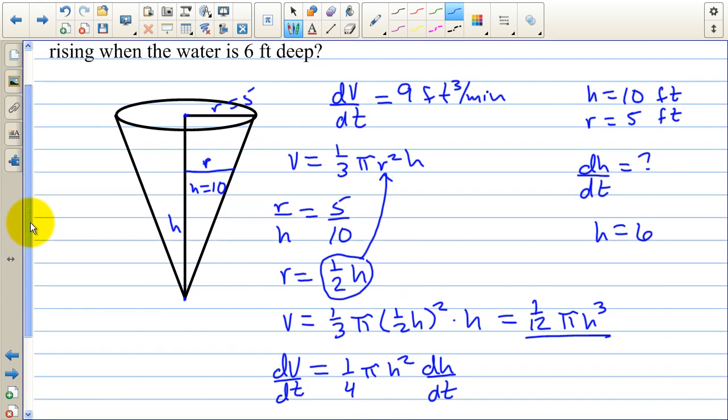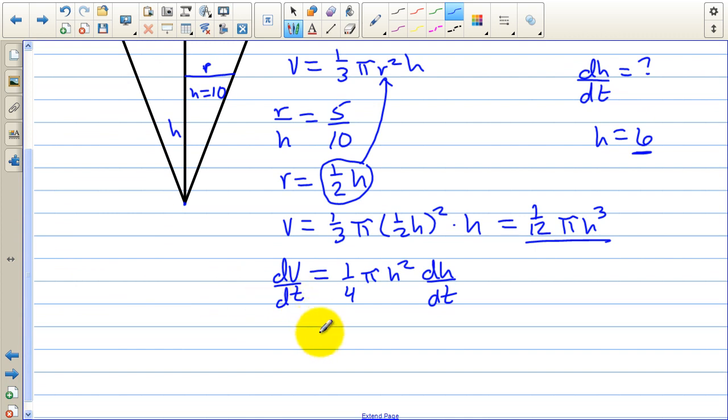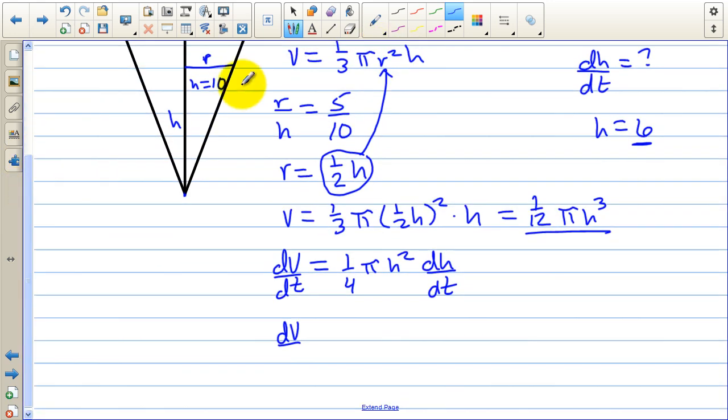Now that we have the derivative we can plug in our values. And we want to know what dh dt is when the height is 6. We have another value, the 9 over here. We know that dv dt is 9. So we have 9 equals 1 fourth pi times 36. And we're trying to find dh dt.